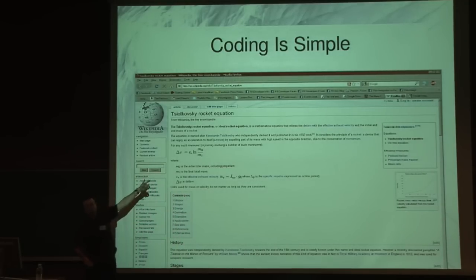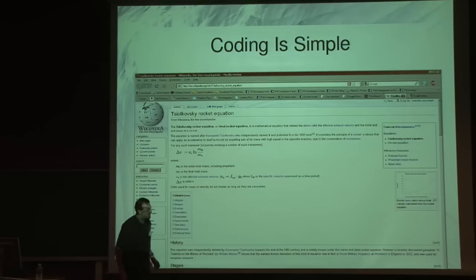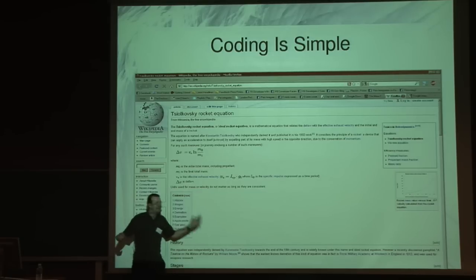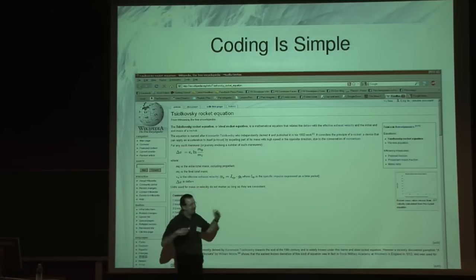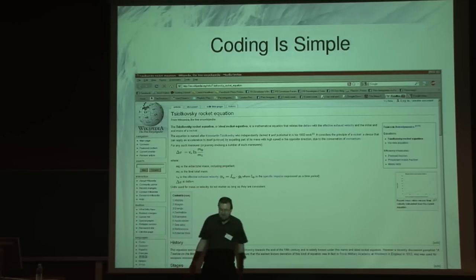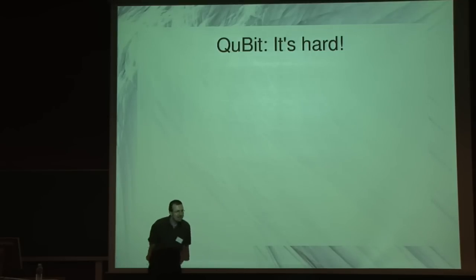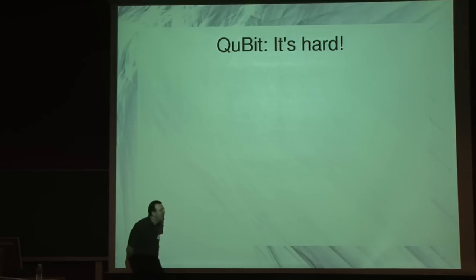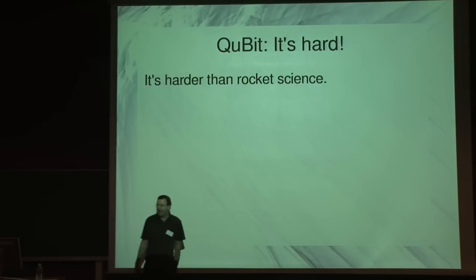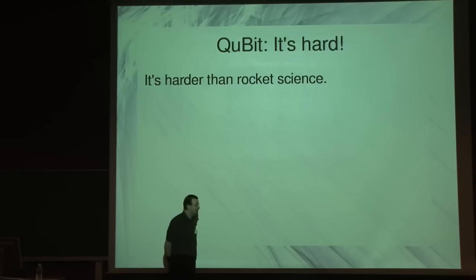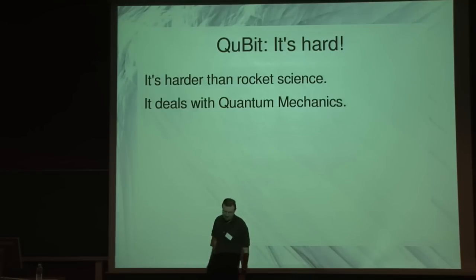That equation is how rockets get up into orbit — a Russian guy invented that many, many years ago. So coding is obviously a bit simple. Getting a bit bored by it, so let's do something hard for a change. Let's make a library that purposely makes coding more difficult.